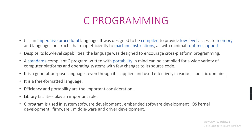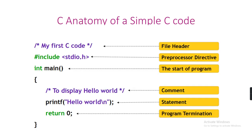C is a free-formatted language and it is used in software development, embedded software development, etc. Coming to the anatomy of a simple C code, this is the structure which will implement a code. First is file header, next preprocessor directive, then the start of program and comment statement, followed by program termination.